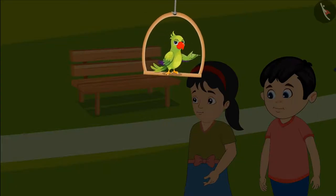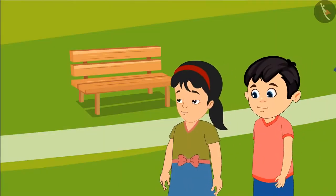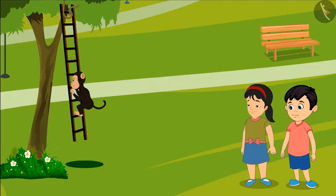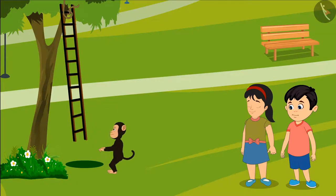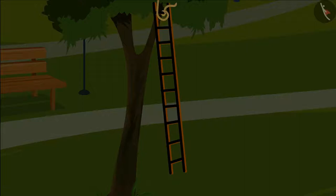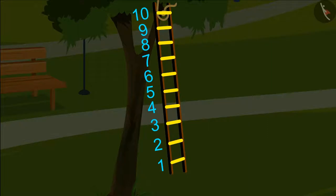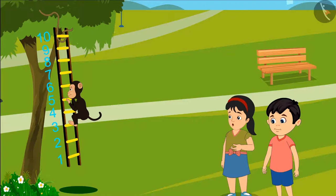Today Chotu has gone to the park to play with his sister Pinky. When they reached there they saw a ladder hanging from a tree and a monkey playing on it. They started watching the monkey play. Kids, we have written the numbers 1 to 10 on the ladder, then it will be easier to see how the monkey is playing.